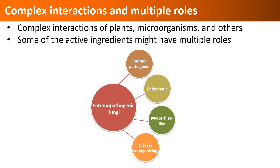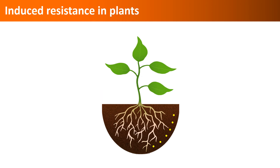Several studies also showed that entomopathogenic fungi antagonize plant pathogens. So they have entomopathogenic, endophytic, mycorrhizal, and disease-antagonizing properties. It helps to understand the various roles of biologicals and their interactions with others, and to develop strategies that can maximize their potential for both agronomic and pest control purposes.